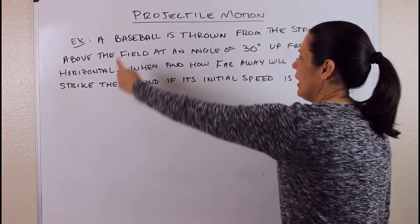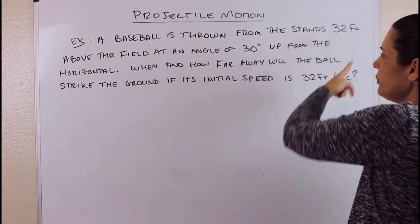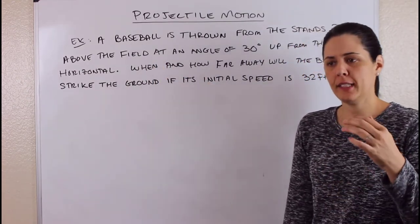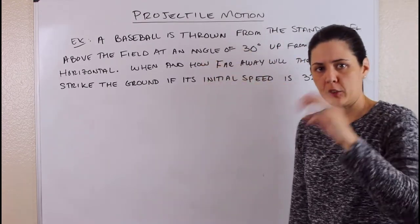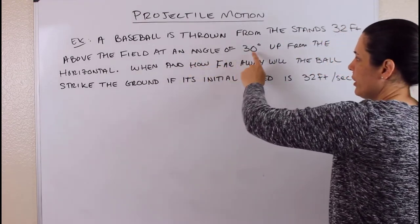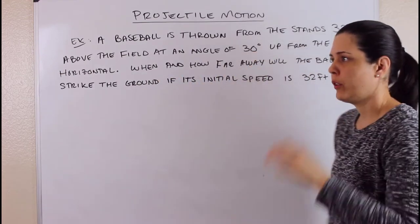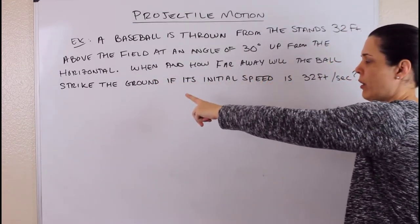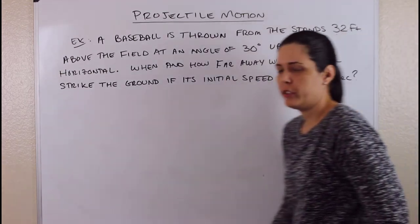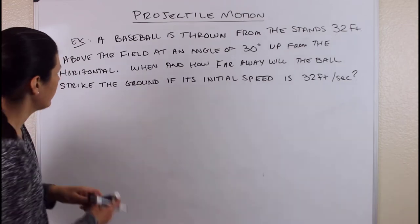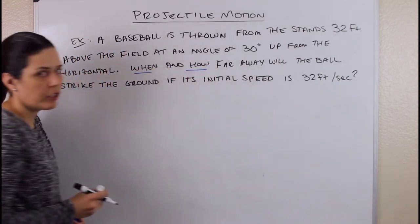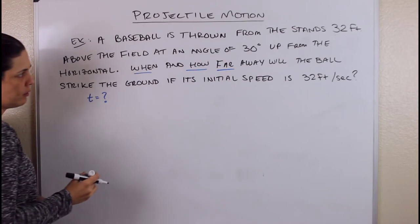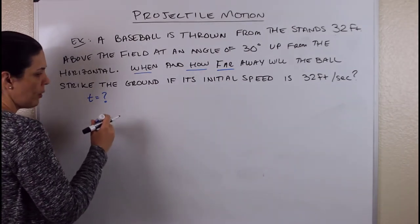Here's the example: a baseball is thrown from the stands, 32 feet above the field. Imagine someone in a baseball stadium, a little higher up, throwing a ball toward the field. It's thrown at an angle of 30 degrees up from the horizontal. When and how far away will the ball strike the ground if its initial speed is 32 feet per second? So 'when' means I'm looking for a time, and 'how far' means a distance.